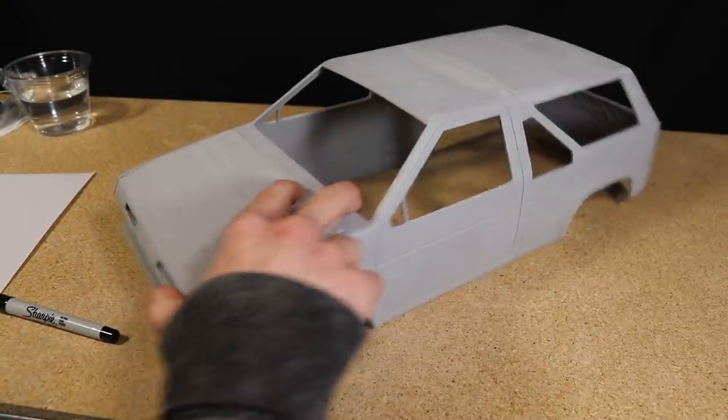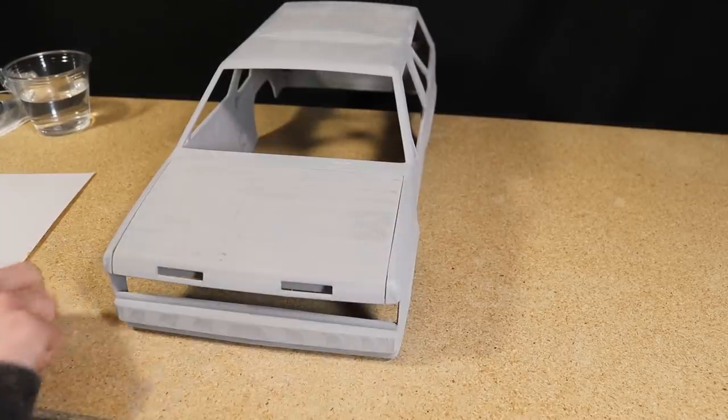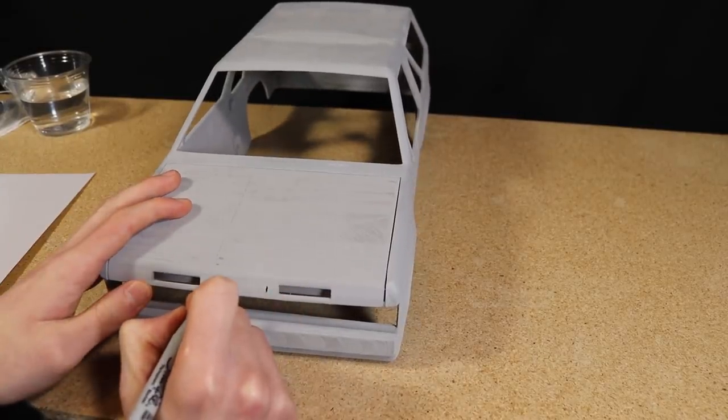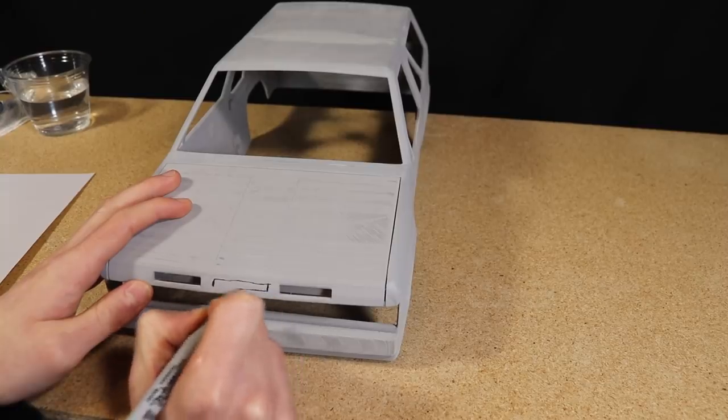To make this body look more like a Pathfinder, I cut a third opening on the hood. I roughly marked where I would need to make the cuts. Then I used a hot knife to remove this section.